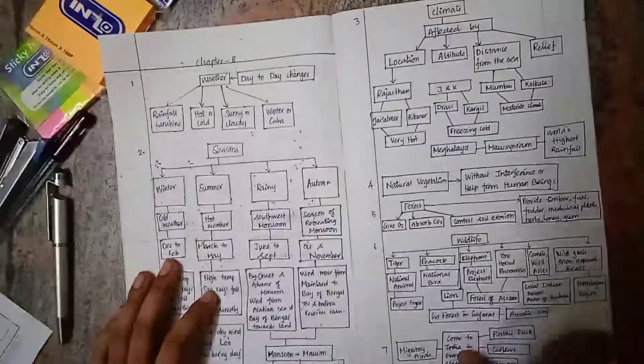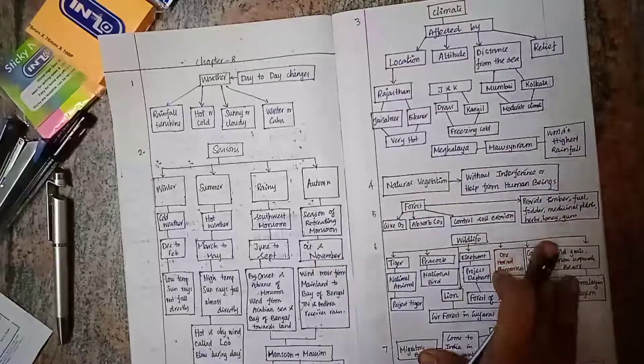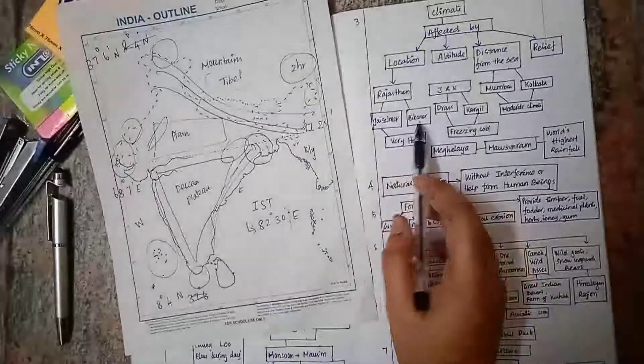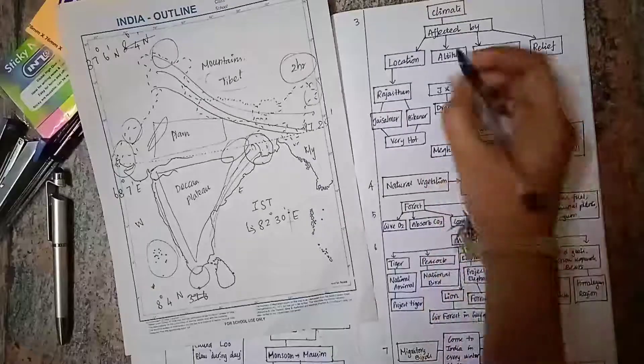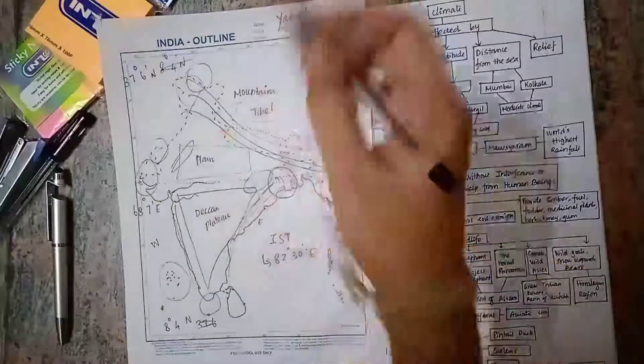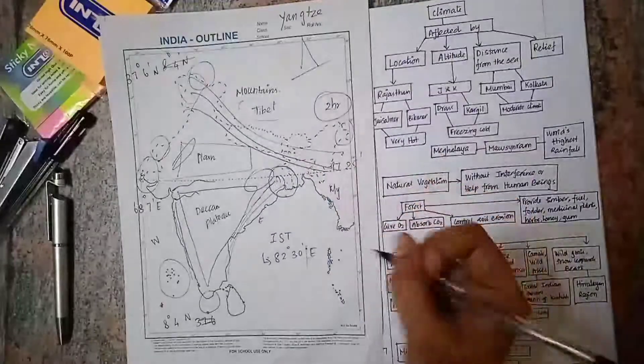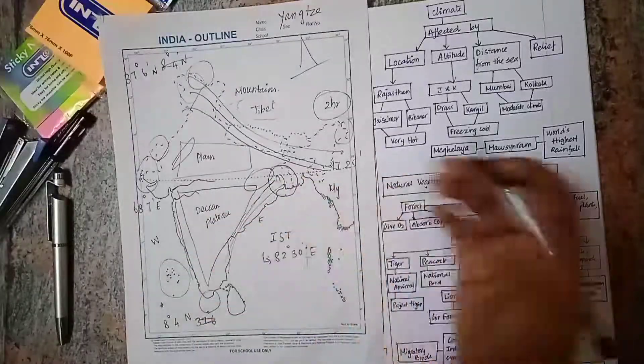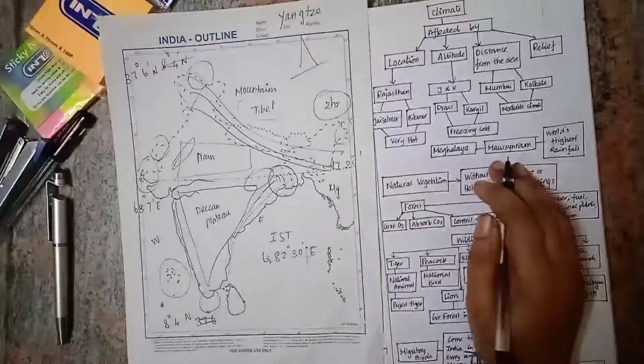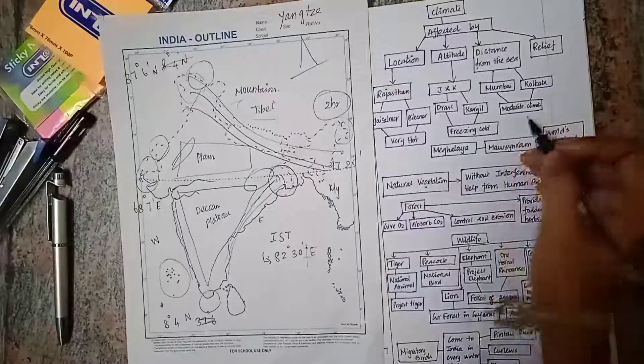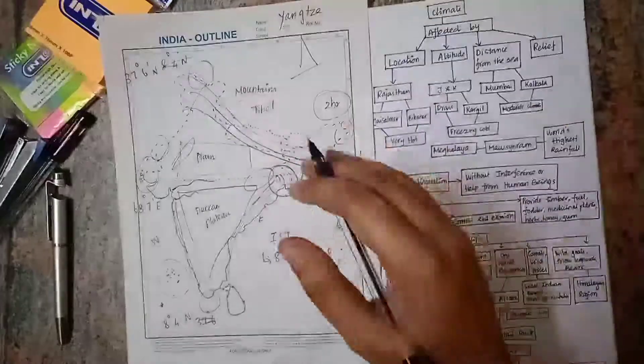Climate is affected by certain factors including location, altitude, distance from sea, and relief. For location, Rajasthan is located in a desert region with Thar Desert, so Jaisalmer and Bikaner are very hot. For altitude, Jammu and Kashmir is located at very high altitude with high mountains, so Drass and Kargil are freezing cold. For distance from the sea, Mumbai and Kolkata are in coastal regions, so air from the sea moderates the temperature, giving them moderate climate. Based on relief also, climate is affected.